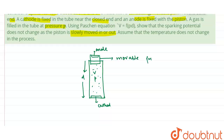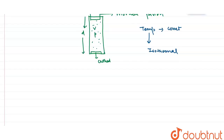They are saying that this piston is moving in or out very slowly, which means temperature remains constant. When temperature remains constant, the process is isothermal. From Boyle's Law, at constant temperature, the product of pressure and volume is constant: pV = constant.